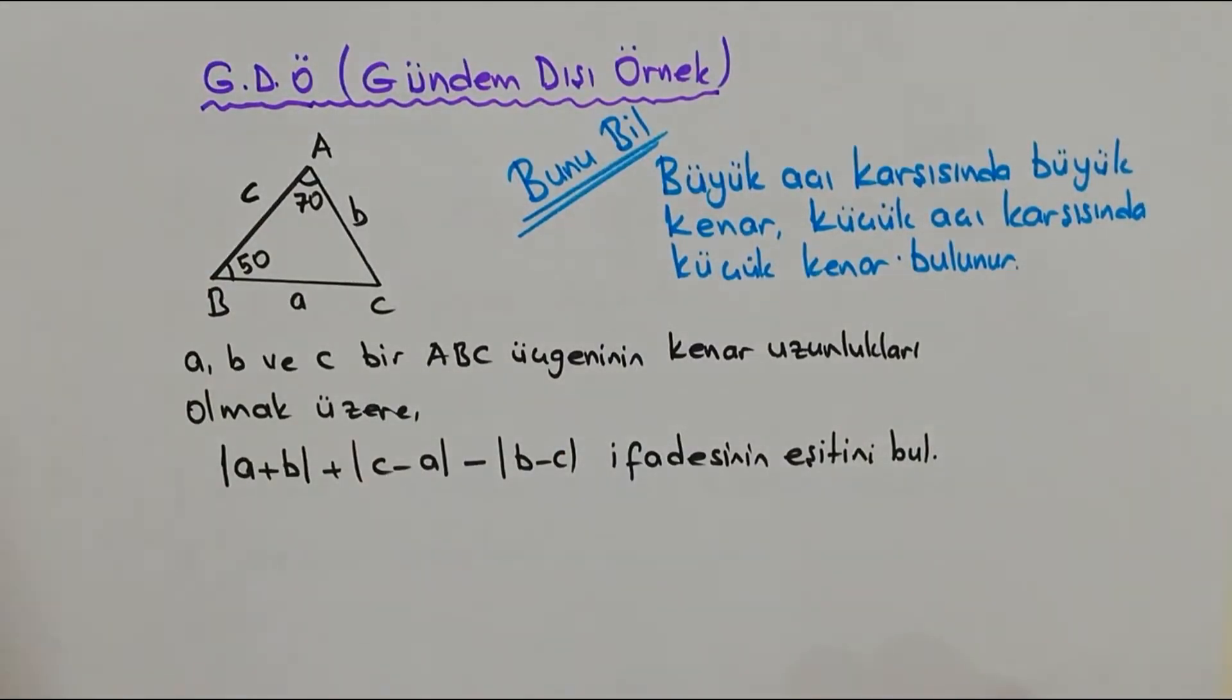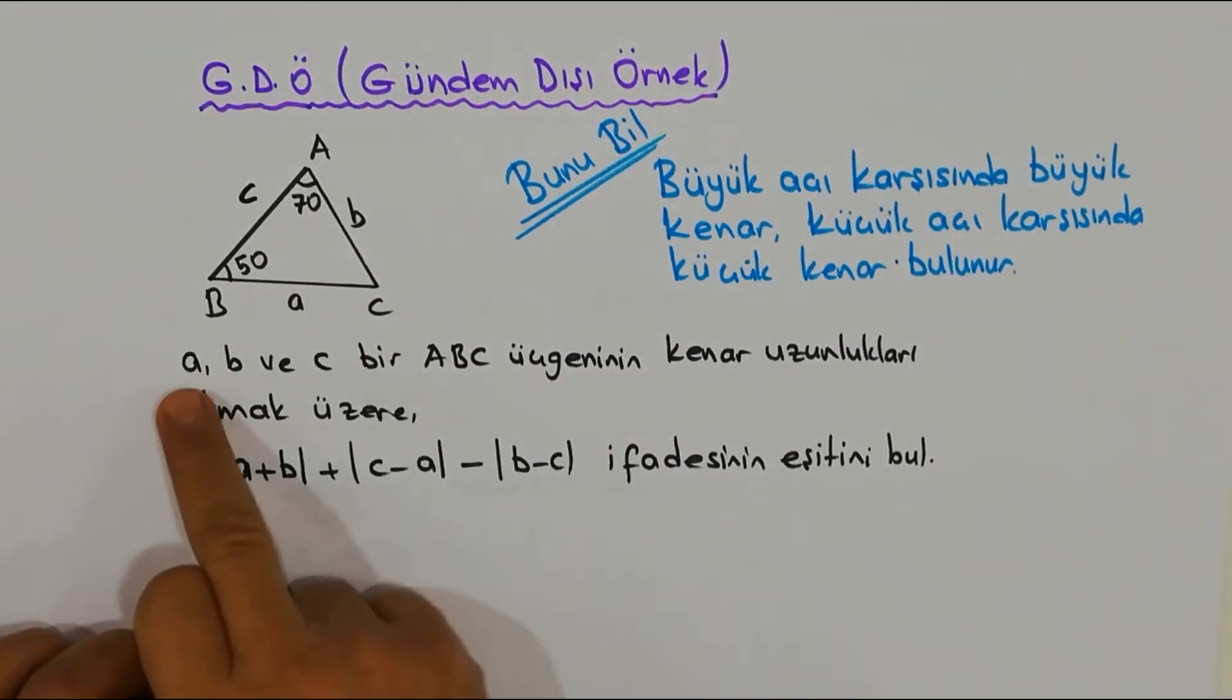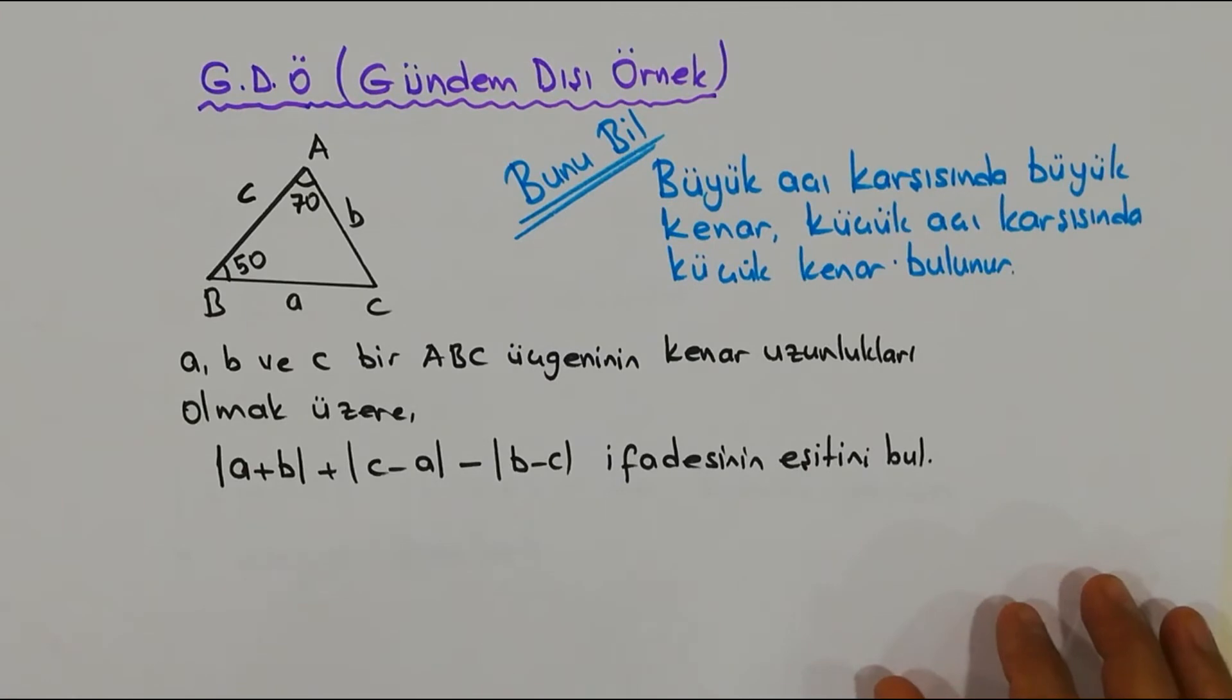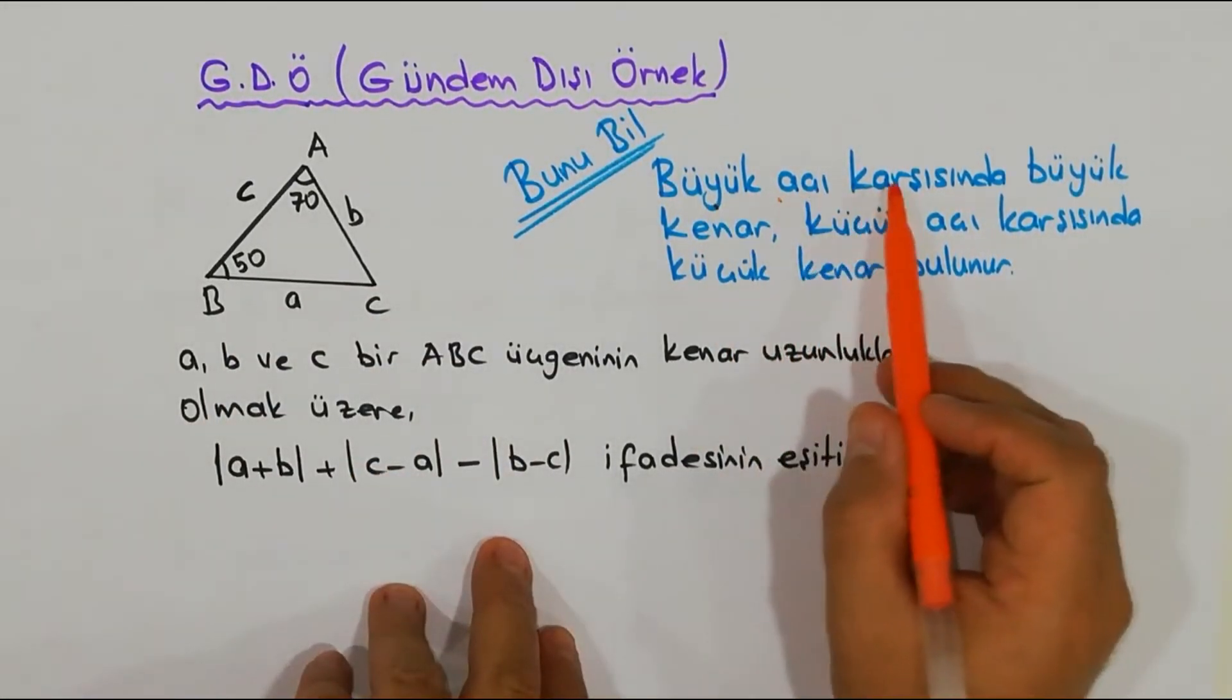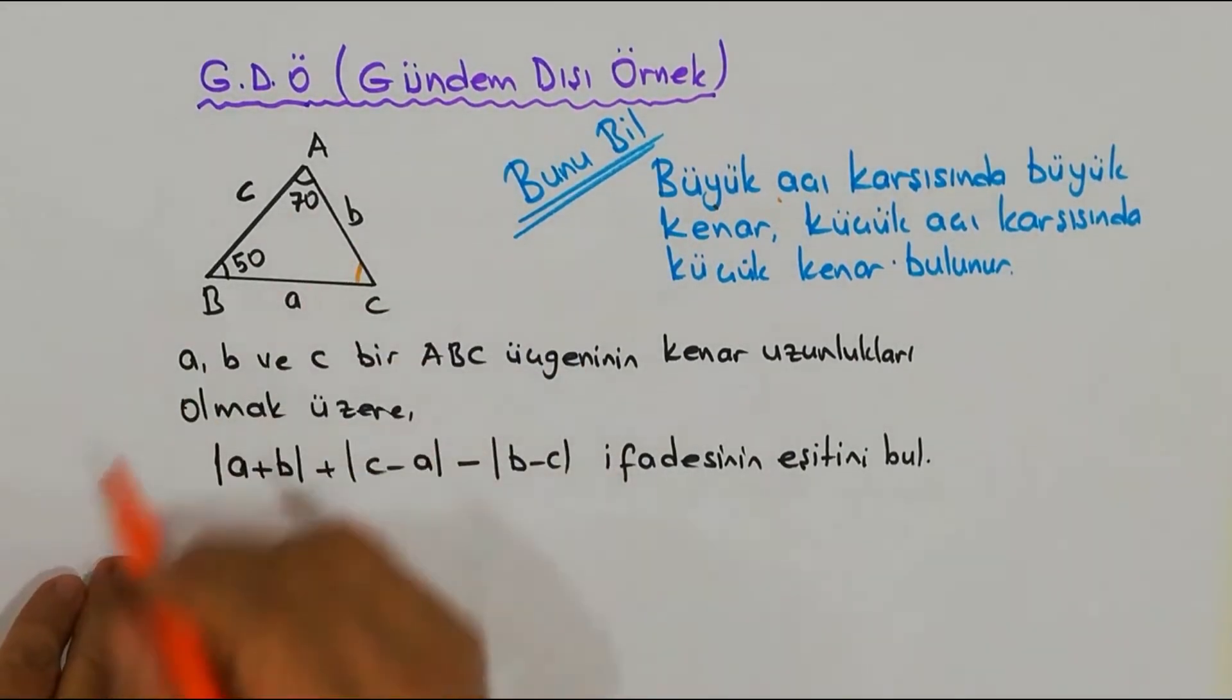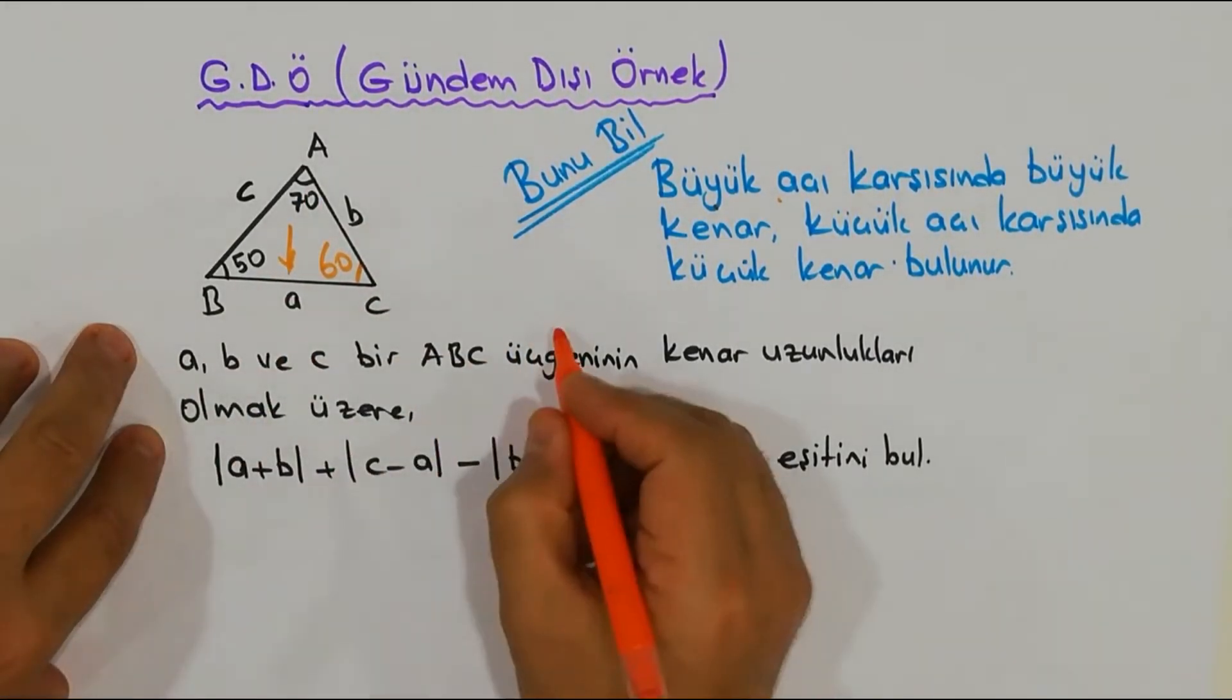Geldik GDÖ sorusu. Haydi hocam GDÖ olmasın o, bu GDÖ - gündem düşü örnek. Hocam bu üçgen burada ne işi var, biz mutlak değerle uğraşıyoruz? Evet arkadaşlar haklısınız fakat bunu da mutlak değerden çözeceğiz. Şöyle bir soru arkadaşlar: Herhangi bir ABC üçgeni, iki açısı biliniyor. Diyor ki bir ABC üçgeninin kenar uzunlukları, buna göre şunun eşitini bulun. Peki biz geometri dersinde şöyle muhteşem bir kural biliyoruz aslında: Büyük açı karşısında büyük kenar vardır, küçük açı karşısında küçük kenar vardır. Ben şurayı bilmiyorum, 70, 50, daha 120, buraya 60 kaldı güzel.